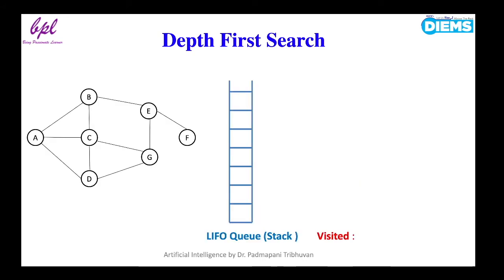The algorithm will start with node A and will use a LIFO queue, that is a stack data structure. Here we will track the visited nodes. First, node A will be added to the stack. It is not a goal state so it will be explored further. There are three nodes adjacent to A: node B, node C, and node D.